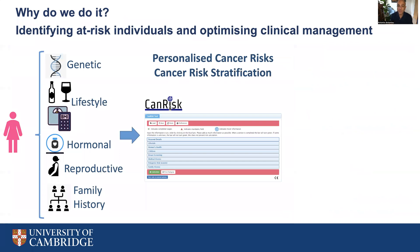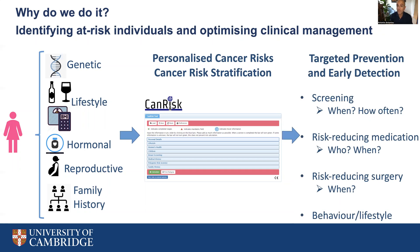So why do we do it? Multifactorial risk prediction enables us to provide more personalized cancer risks and therefore facilitates cancer risk stratification. By that I mean it enables us to identify women who have sufficiently different risks of developing breast cancer and for whom clinical management options may be different. The ultimate aim is to identify those who will benefit most from available prevention and early detection approaches — for example, identifying those who will benefit from screening, deciding when and how often to offer screening, deciding who will benefit most from risk-reducing medication or surgery, and identifying those who will benefit most from lifestyle or behavioral changes.